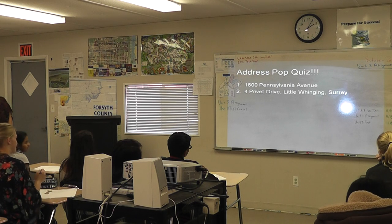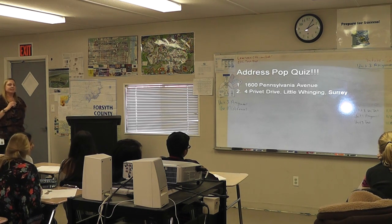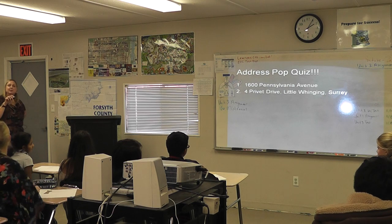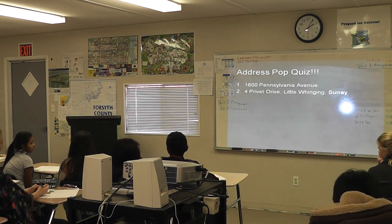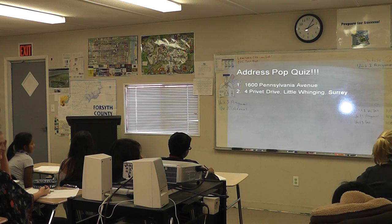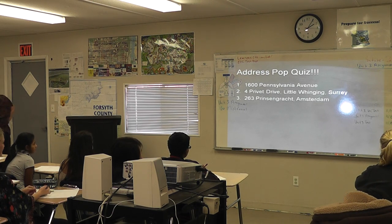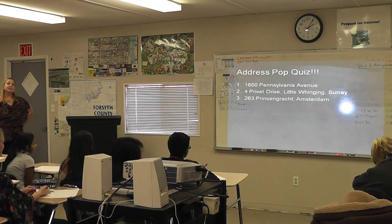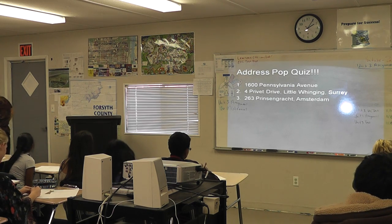Number two: 4 Privet Drive, Little Whinging, Surrey. Why is that significant? Who lives there? Number three: 263 Prinsengracht in Amsterdam. Why is that significant?